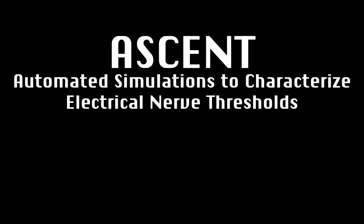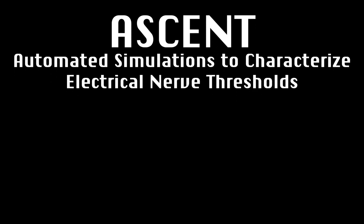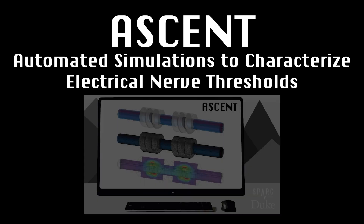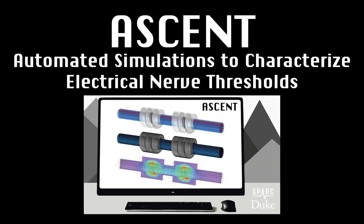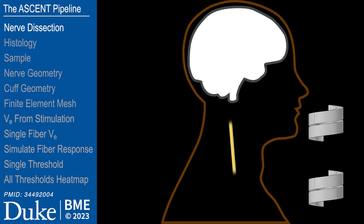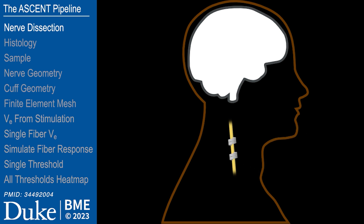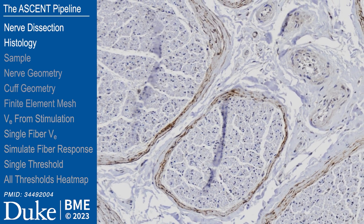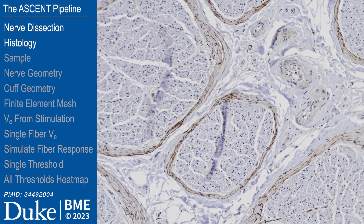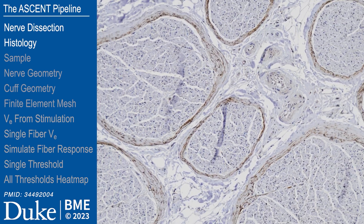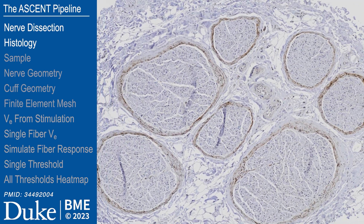Welcome to the video tutorial for ASCENT, which stands for Automated Simulations to Characterize Electrical Nerve Thresholds. The software was developed in Dr. Warren Grill's lab in the Department of Biomedical Engineering at Duke University in Durham, North Carolina, with financial support from the NIH SPARC program.